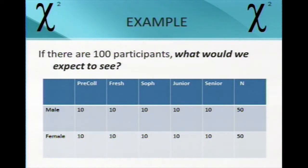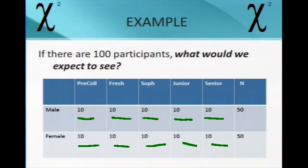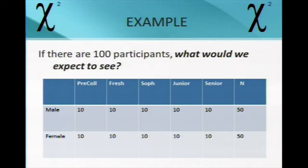All things being equal, if we didn't think that these variables operated together, we would expect there to be about ten cases in all ten cells, making it 100 in total. So if we asked 50 males and 50 females to answer when they took a basic statistics class, we would expect it to look something like this — though of course it wouldn't look exactly like this. When we actually collect the data, we compare to this notion. It's all equal, and this is essentially the null hypothesis — that we would expect there not to be any real differences.